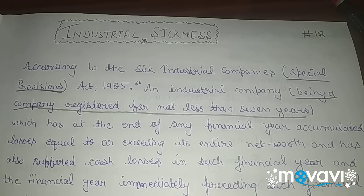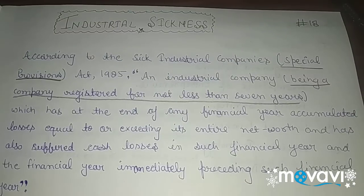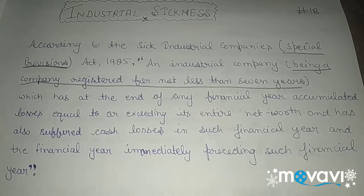So according to the Sick Industrial Companies Act 1985, under a special provision, an industrial company which has at the end of any financial year accumulated losses equal to or exceeding its entire net worth, and has also suffered cash losses in such financial year and the financial year immediately preceding such financial year. This definition is a bit confusing.